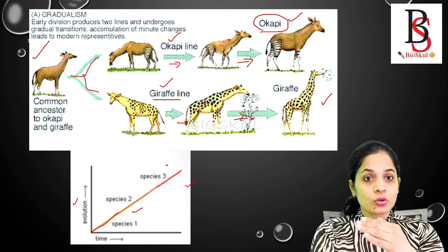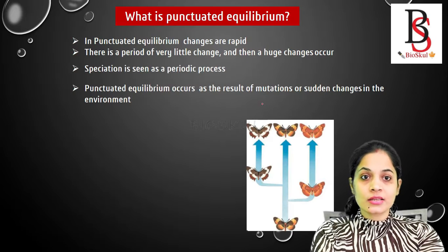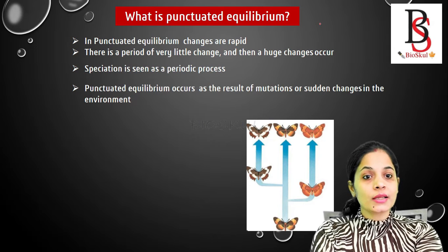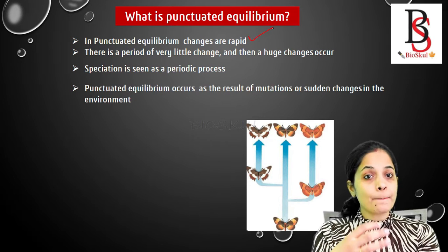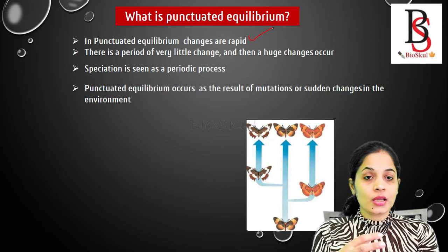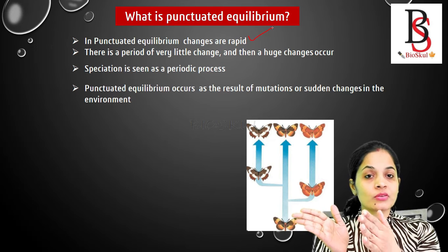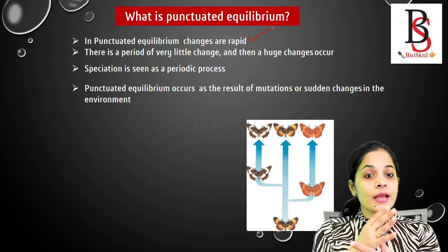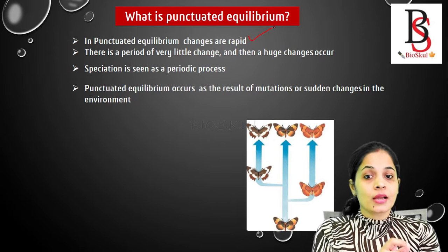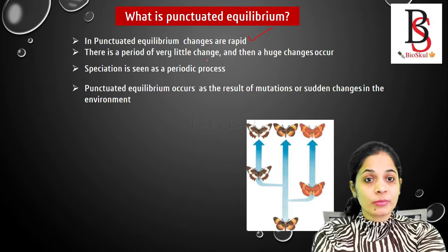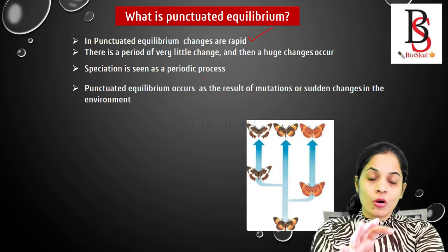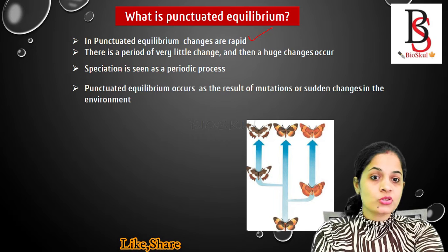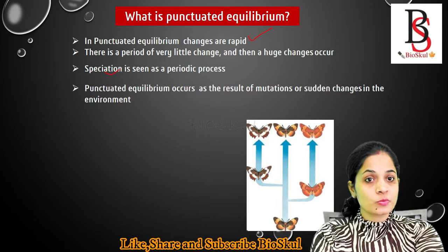Now, what is punctuated equilibrium? In punctuated equilibrium the changes are very rapid — unlike gradualism where changes are very slow. Another key point is that the evolution leads to the formation of new species.